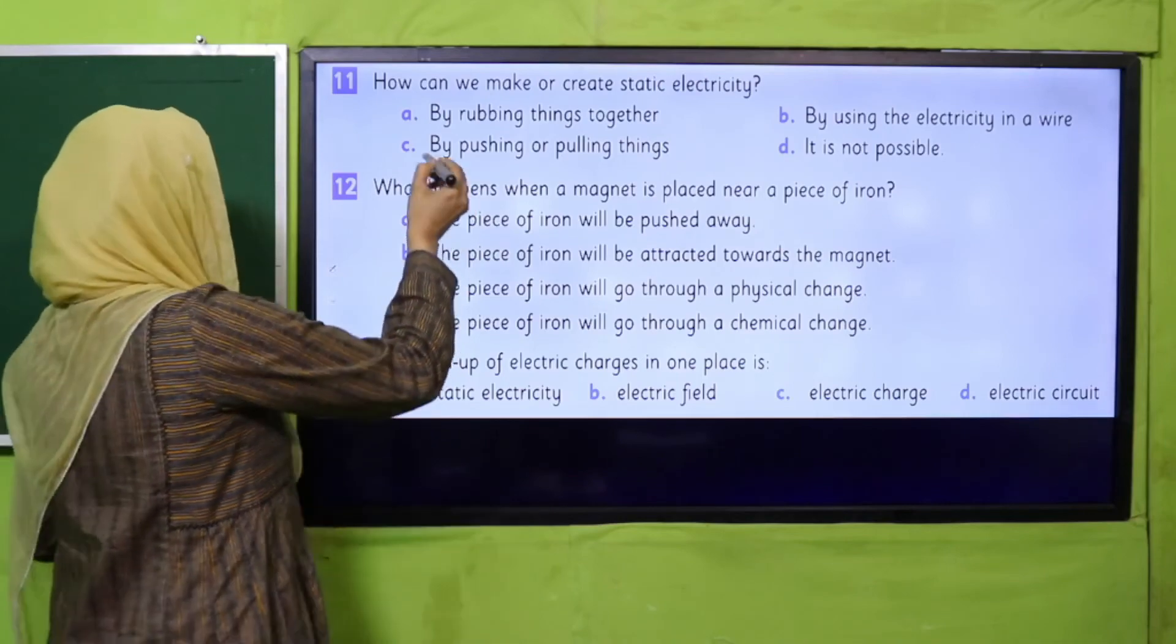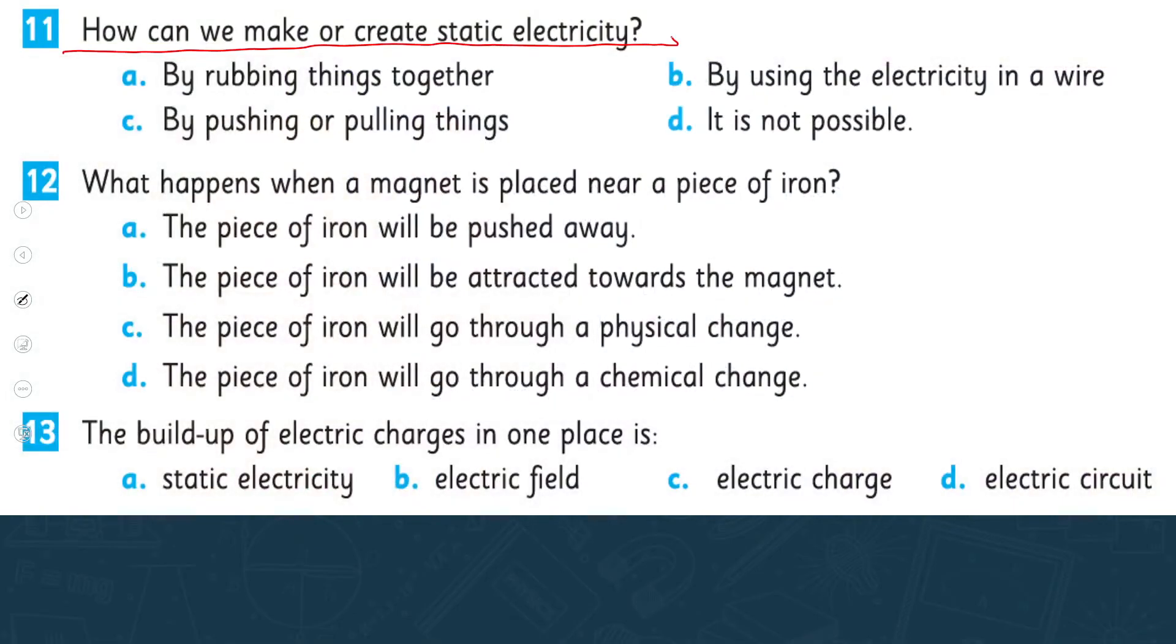Number 11: how can we make or create static electricity? By rubbing things together, by using the electricity in a wire, by pushing or pulling the things, it is not possible. So by rubbing things together we can create static electricity. Number 12: what happens when a magnet is placed near a piece of iron? The piece of iron will be pushed away, the piece of iron will be attracted towards the magnet,